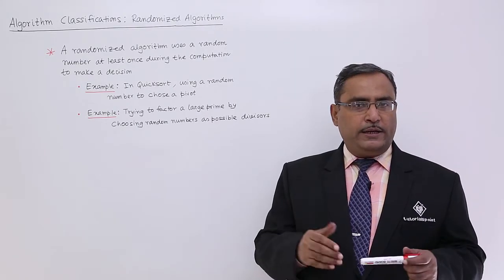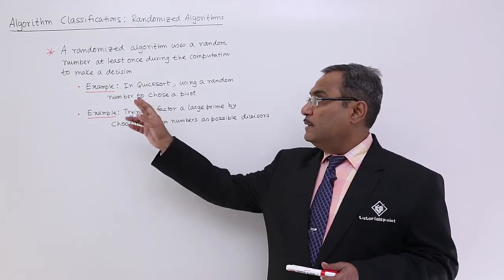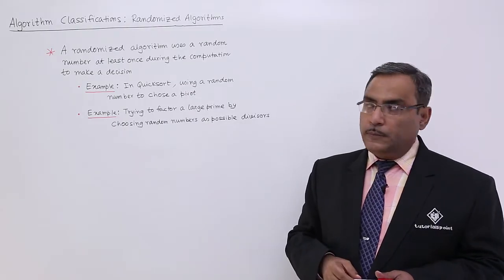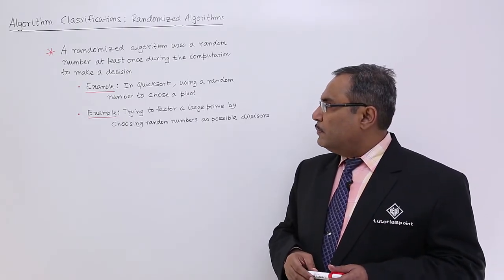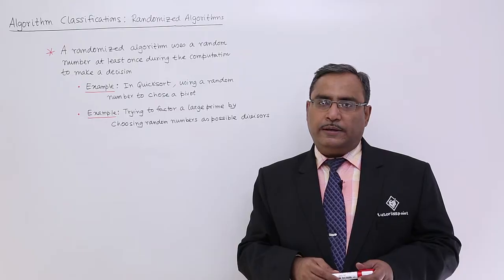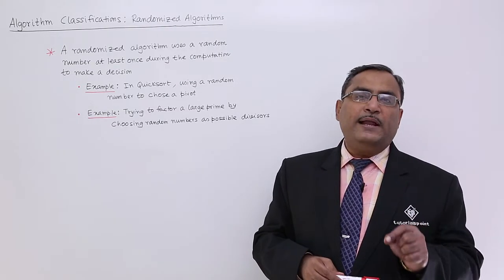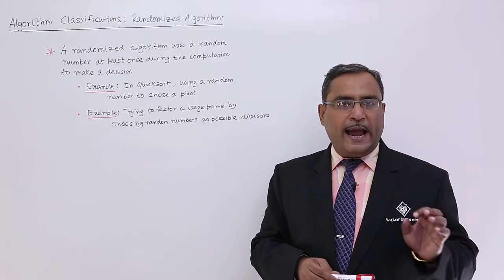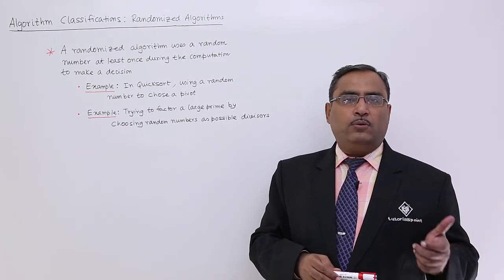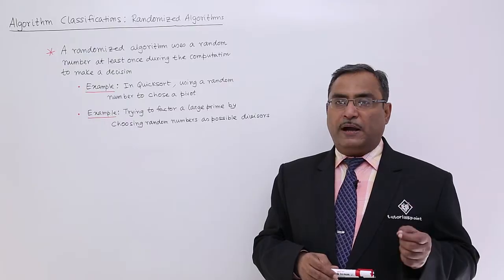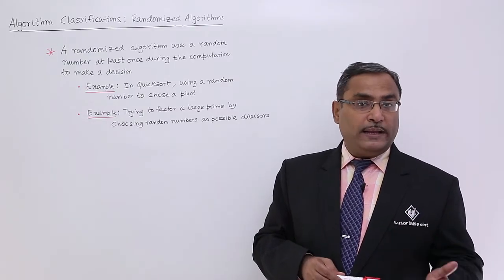I think it will be clear if you go through some examples. Example: in quicksort, using a random number to choose the pivot element. So to choose the pivot element or the pivot element's index number in the array, we can take one random number to select the pivot element. So that is one of the examples.